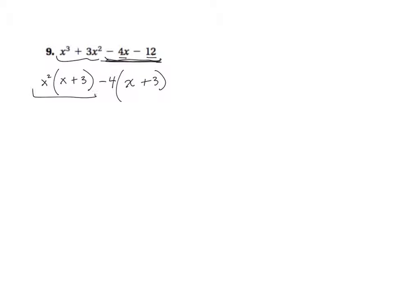So here's a term, here's a term. They each have an x + 3 in it. So I can factor an x + 3 out, and that leaves me with x² - 4.